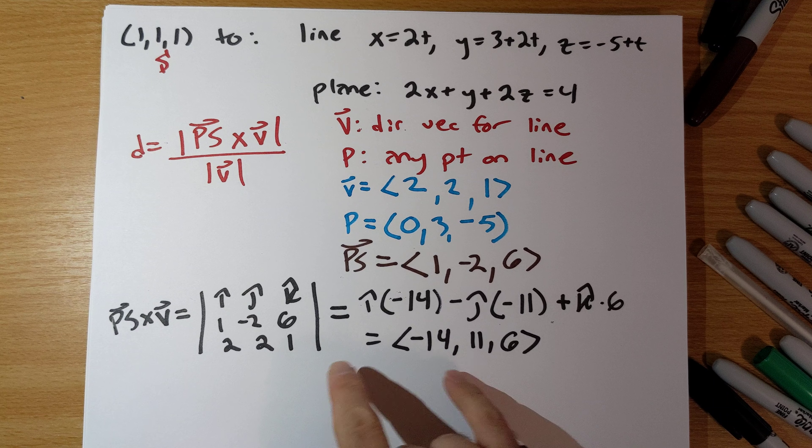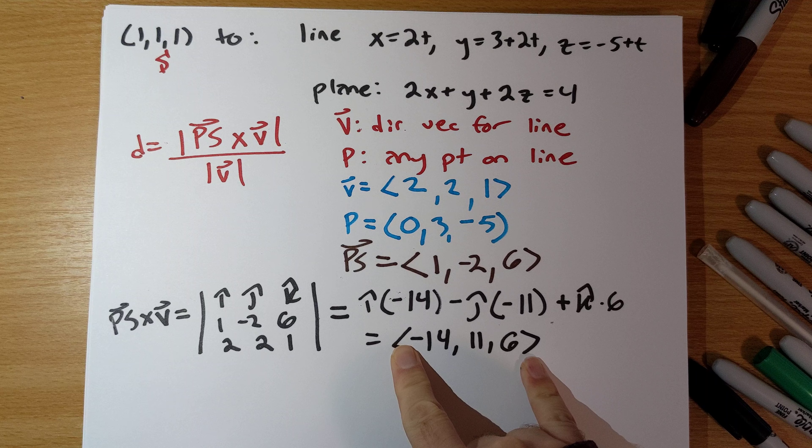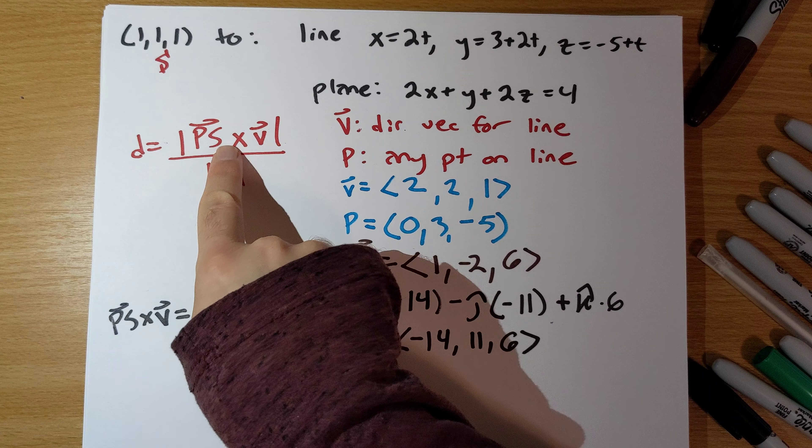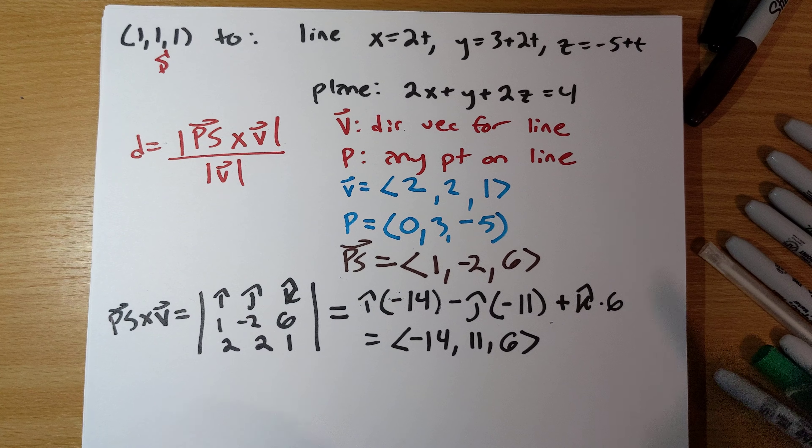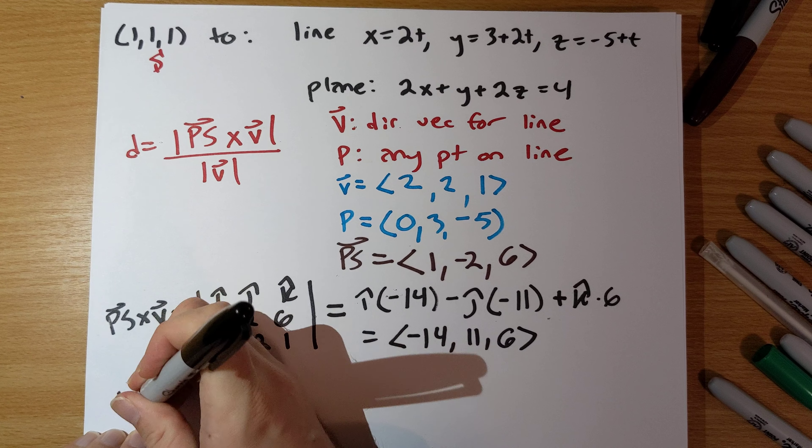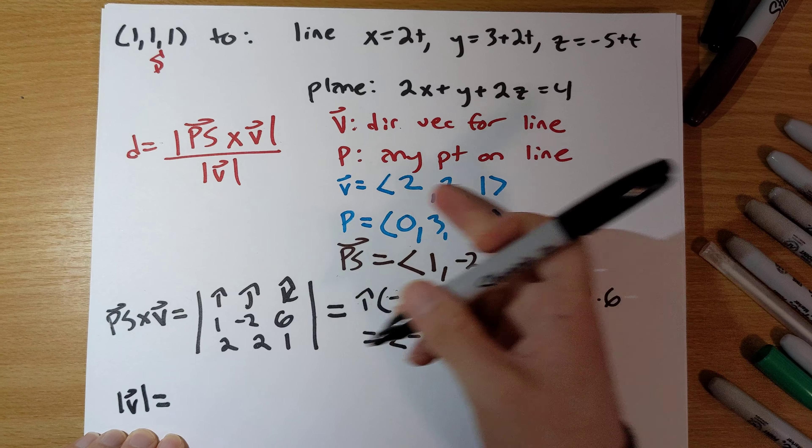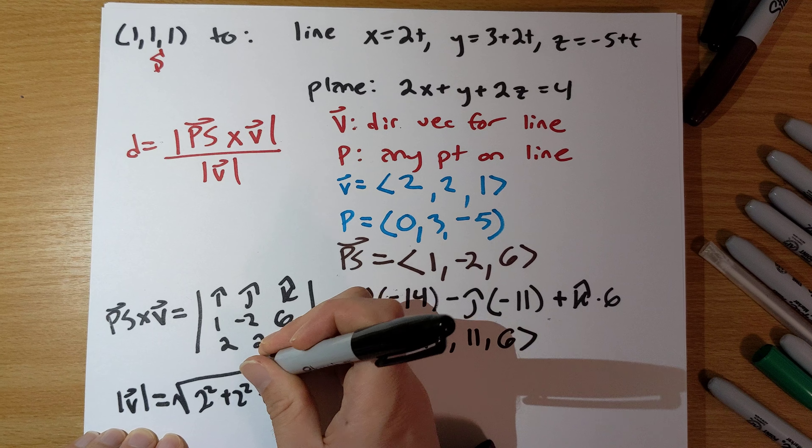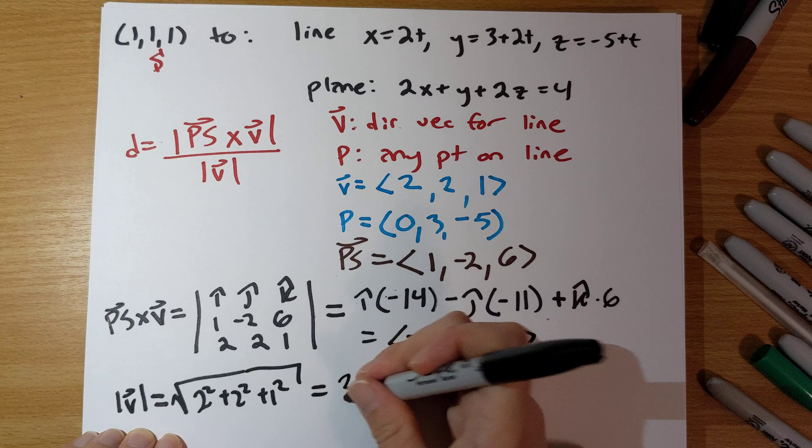Okay, so at this point then, okay, we have the cross product here. We need the magnitude of the cross product and the magnitude of v. So, the magnitude of v here is going to be square root of 2 squared plus 2 squared plus 1 squared. Square root of 9 is 3.